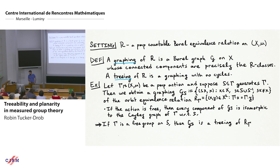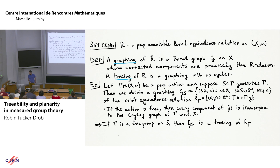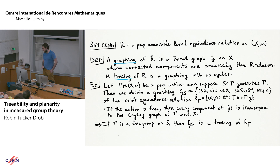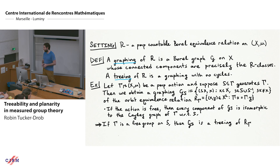A graphing of R is a Borel graph G on X whose connected components are precisely the R-classes. A treeing of R is a graphing with no cycles — it equips every equivalence class with the structure of a tree. The main example: start with your equivalence relation coming from a PMP action of some group Γ, suppose you have a generating set S for Γ, then we obtain a graphing G_S where two points are adjacent if they differ by a generator.